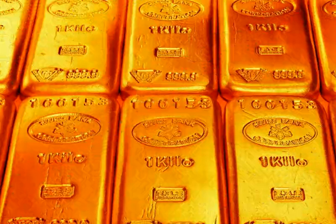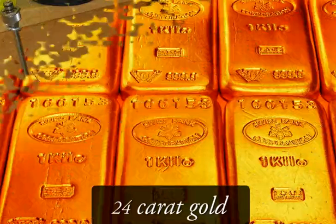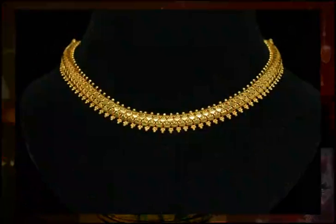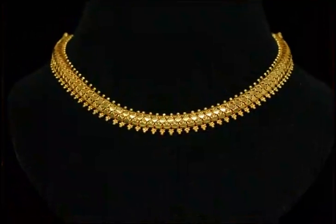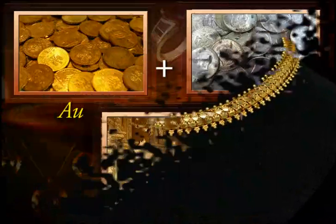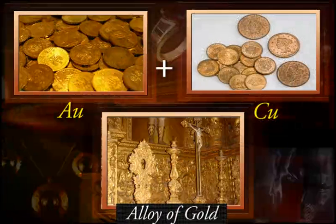Similarly, pure gold — i.e., 24 karat gold — is very soft and hence is not suitable for making jewellery. So it is alloyed with silver and copper to make it hard.